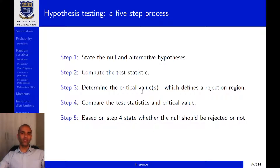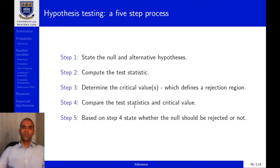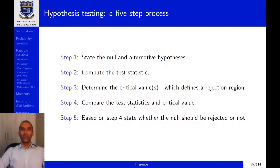In step four we compare the test statistic and critical value, and in step five we use the outcome of that comparison to determine whether or not we should reject the null hypothesis. When the test statistic is larger than the critical value in a right-tailed test, we reject the null hypothesis. In a left-tailed test, when the test statistic is smaller than the critical value, we reject the null. In any of the three types of tests, if the test statistic lies within the rejection region, we reject the null hypothesis.